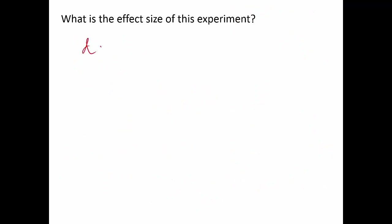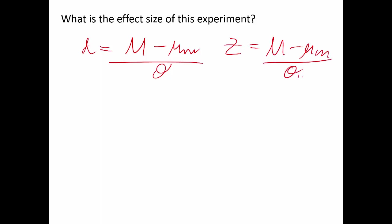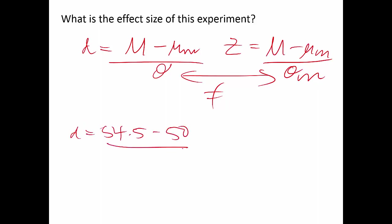The population mean was 50, and it falls outside the confidence interval of [50.58, 58.42], which means we're likely to reject the null — consistent with our earlier result. For effect size: d = (M − μ) / σ = (54.5 − 50) / 10 = 0.45. Guidelines: 0.2 is small, 0.5 is medium, 0.8 is large — so this is a small-to-medium effect size.